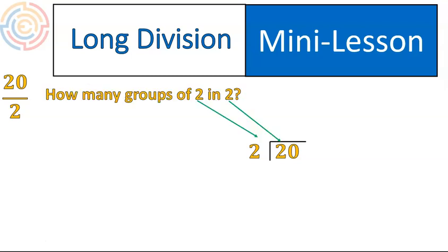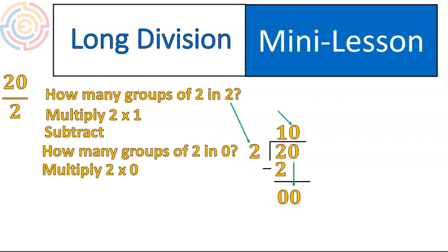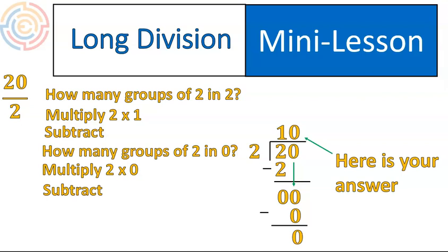You set up long division in this way, and you ask yourself, how many groups of 2 are there inside of 2? That answer is 1. We're going to multiply those two numbers, 2 times 1, and put the result down there. We'll now subtract. 2 minus 2 is 0. Now I'm going to bring that down. And then I start the process over again. I ask myself how many times the number outside, that 2, goes into 0. In this case, that's 0. So my answer is going to go up there. Then I multiply 0 times 2, which gives me 0, and I subtract, and I get my final answer. The number that is up top here is your final answer. So in this case, 20 divided by 2 is 10.